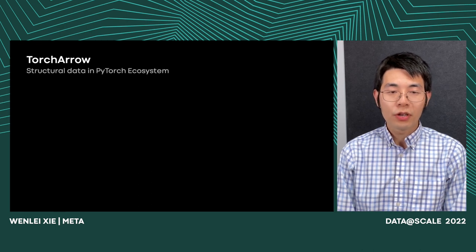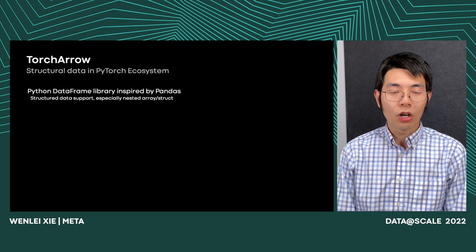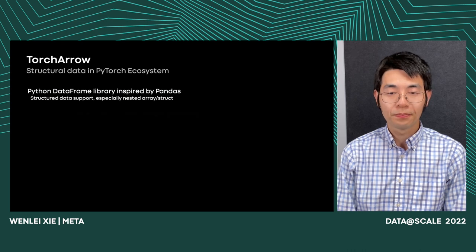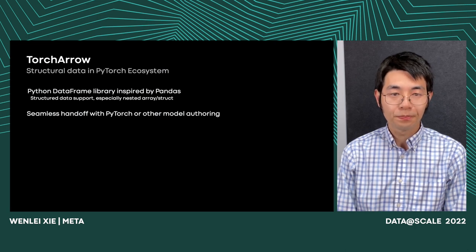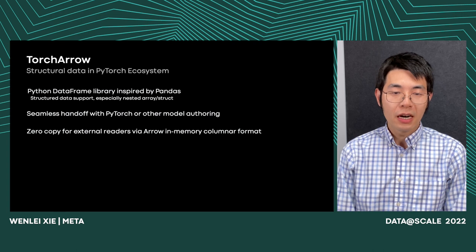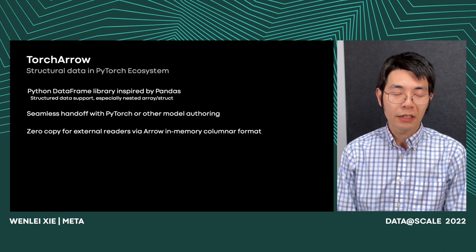With all these observations, we developed TorchArrow, which tries to handle structural data in the PyTorch ecosystem. At a high level, it's a Python DataFrame library inspired by pandas, but with special support for structural data, especially nested arrays or structs. We're also implementing common tensor correlations — for example, dense features encoded with a nested struct can be handed off to PyTorch as tensor format in one collate call. This allows us to easily plug into the PyTorch data loader. As the name suggests, it supports Arrow in-memory columnar format, enabling interop with the Arrow ecosystem and leveraging external readers.